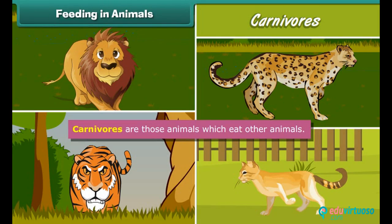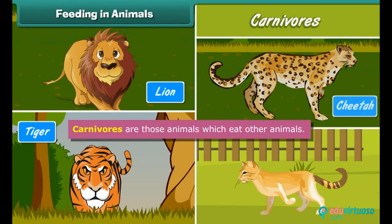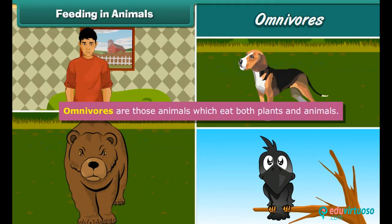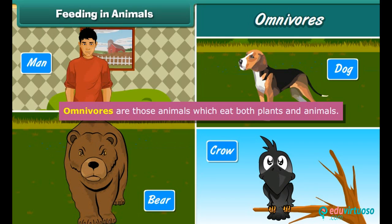Carnivorous are those animals which eat other animals. Examples include lion, tiger, cheetah, and cat. Omnivorous are those animals which eat both plants and animals. Examples include man, bears, dog, and crow.